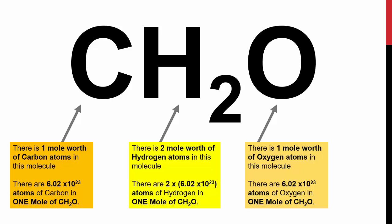Same thing for the hydrogen, but you're noticing that subscript 2 means that there's going to be 2 moles worth of hydrogen atoms in this molecule. Therefore, you have 2 times Avogadro's number amount of atoms of hydrogen in 1 mole of this compound. And finally, with again no subscript, you're noticing that there's 1 mole worth of oxygen atoms in this molecule. So we also notice that in this entire molecule, we have 6.02 times 10 to the 23rd atoms of oxygen in 1 mole of CH2O.